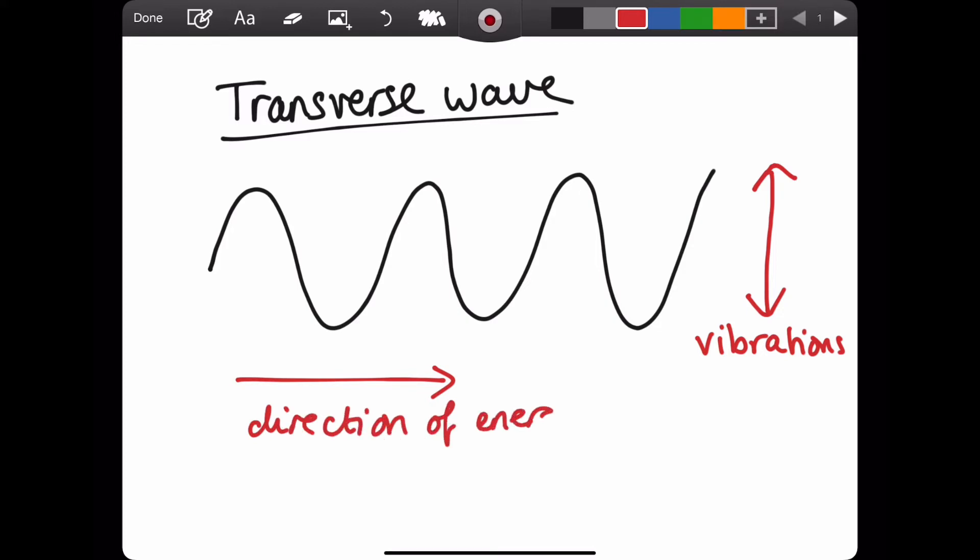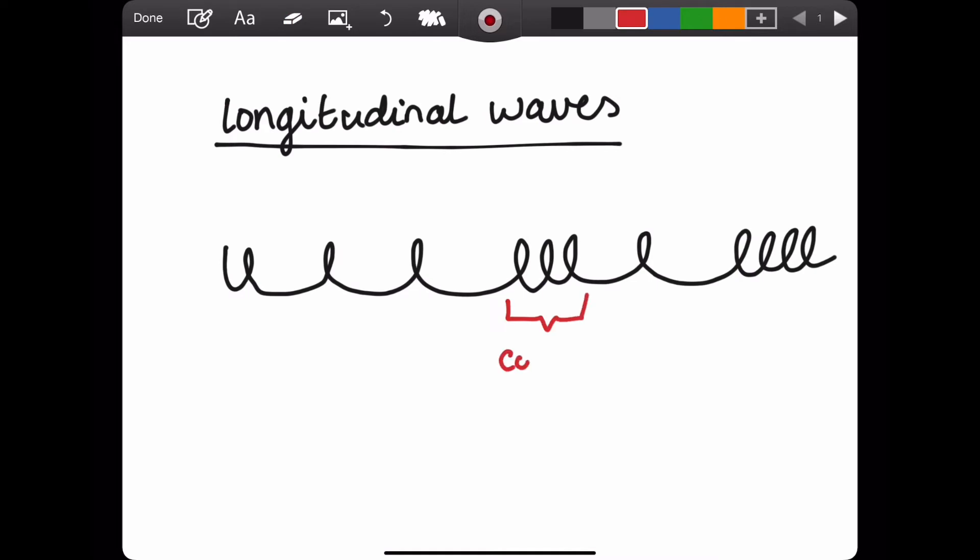Examples of transverse waves are electromagnetic waves like we just said, water waves, or you could also look at waves on a slinky going at 90 degrees.